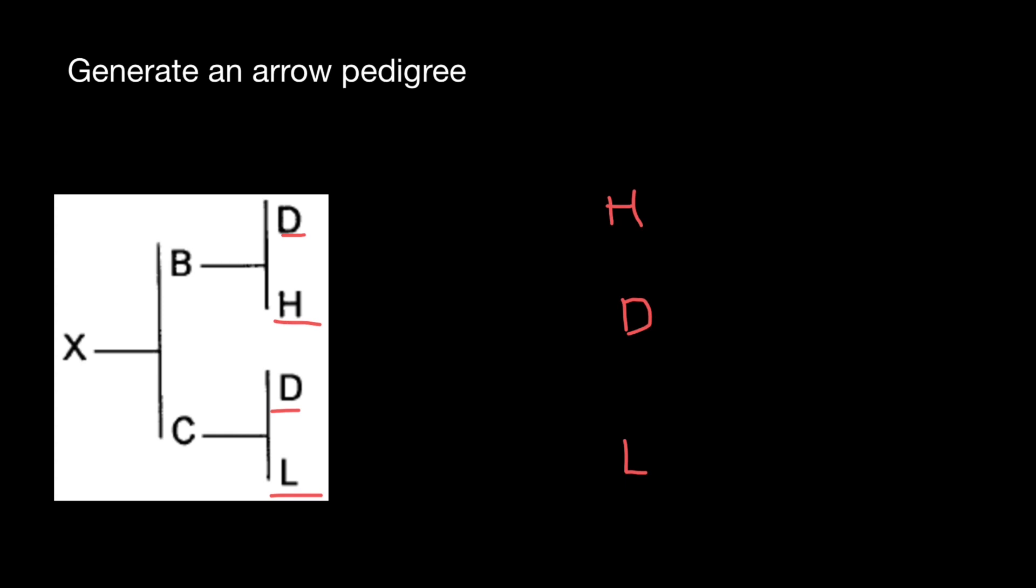And we put parent L here. And they contribute their genes. So this couple contributes their genes to their child B or offspring B.